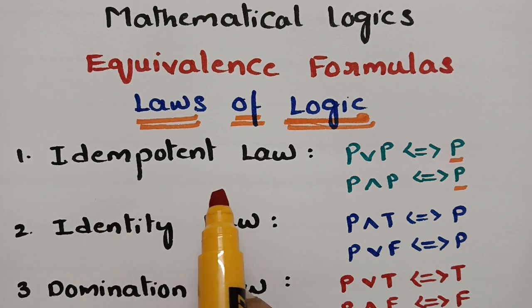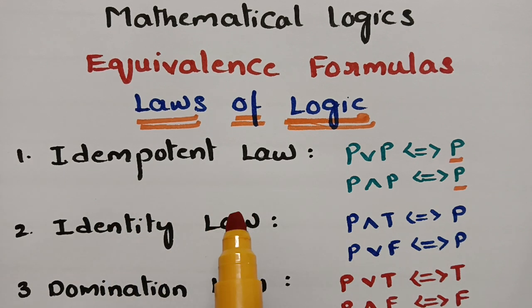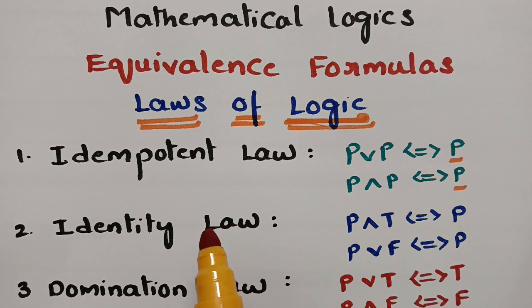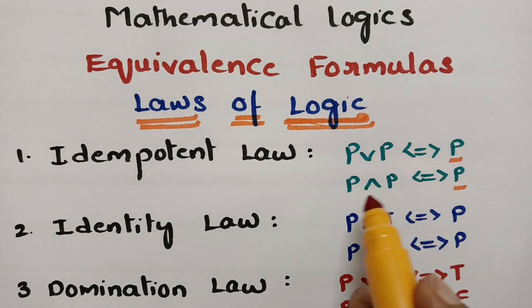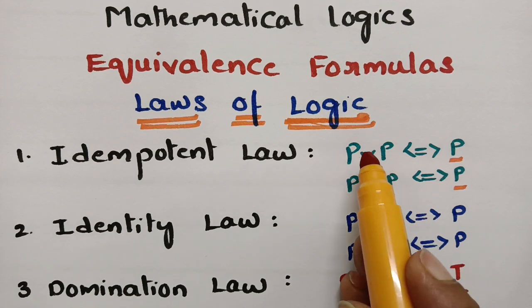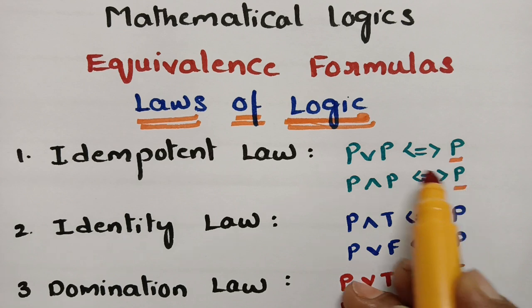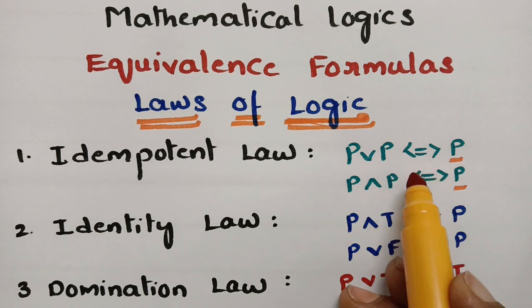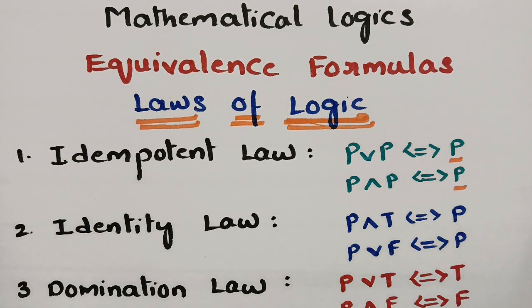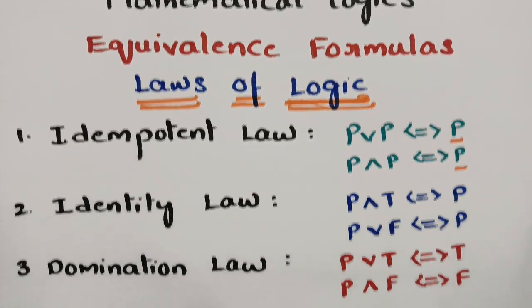The first one is the idempotent law. As you know from your previous classes, a squared is equal to a. So if there are two a's, a will be the answer. Here, if there are two p's — that is, p OR p, or p AND p — whether it is conjunction or disjunction, the answer will be p. So idempotent law: p OR p equals p, and p AND p equals p.